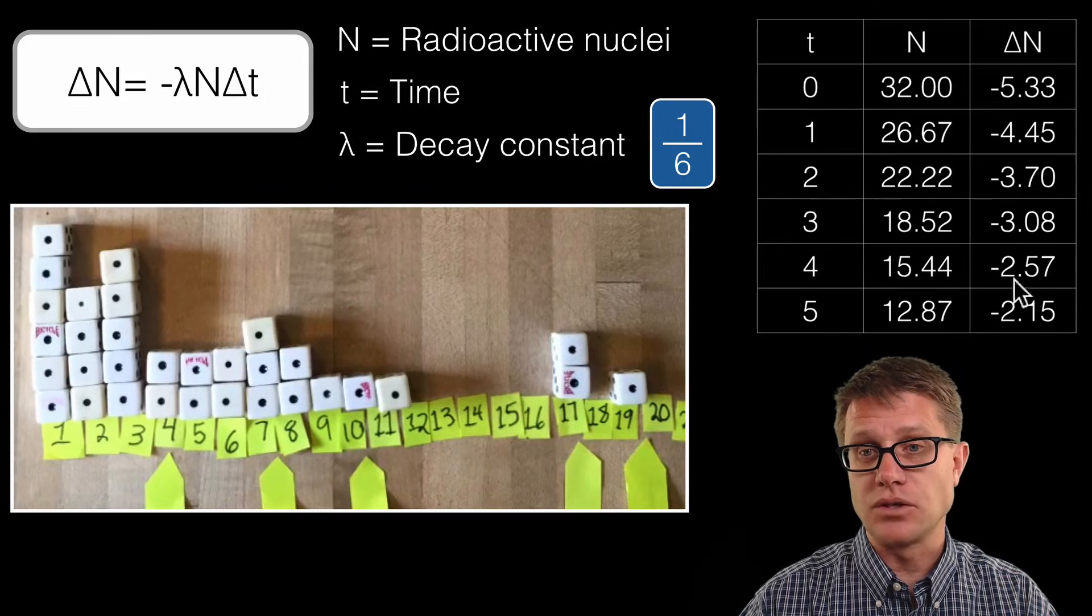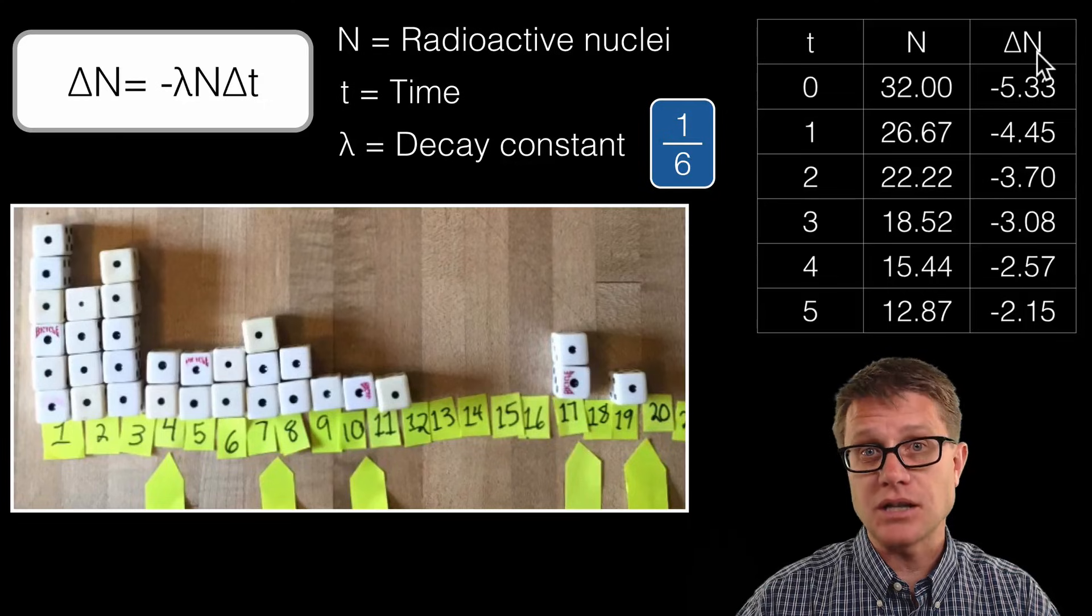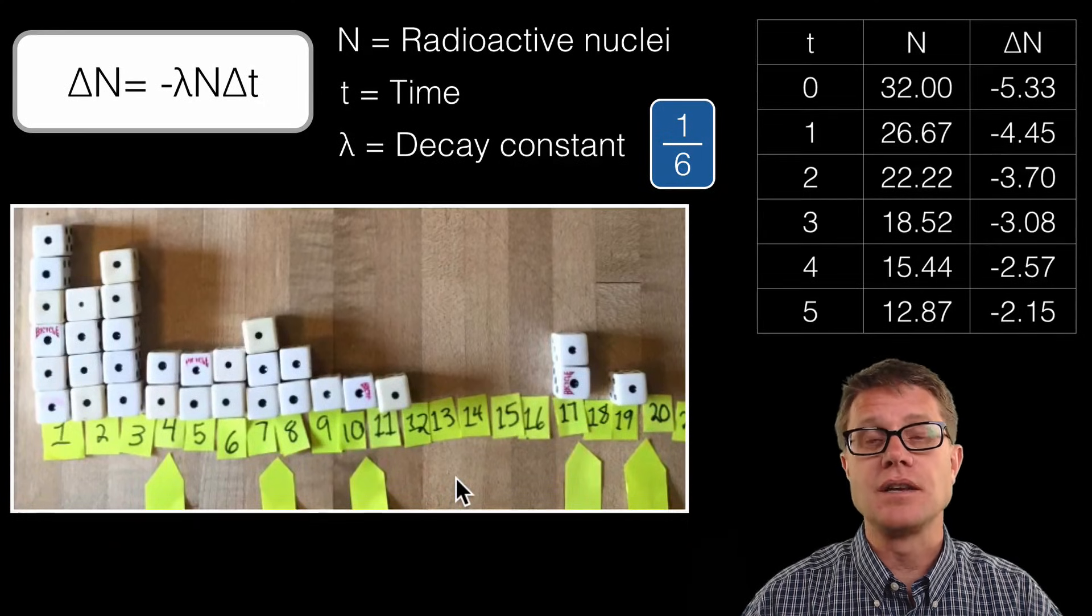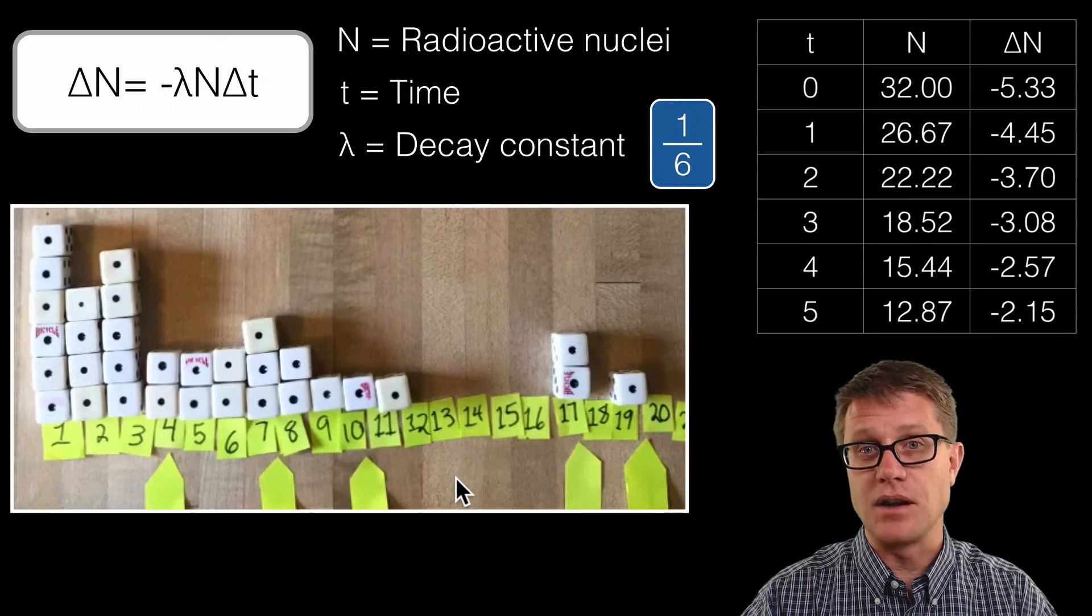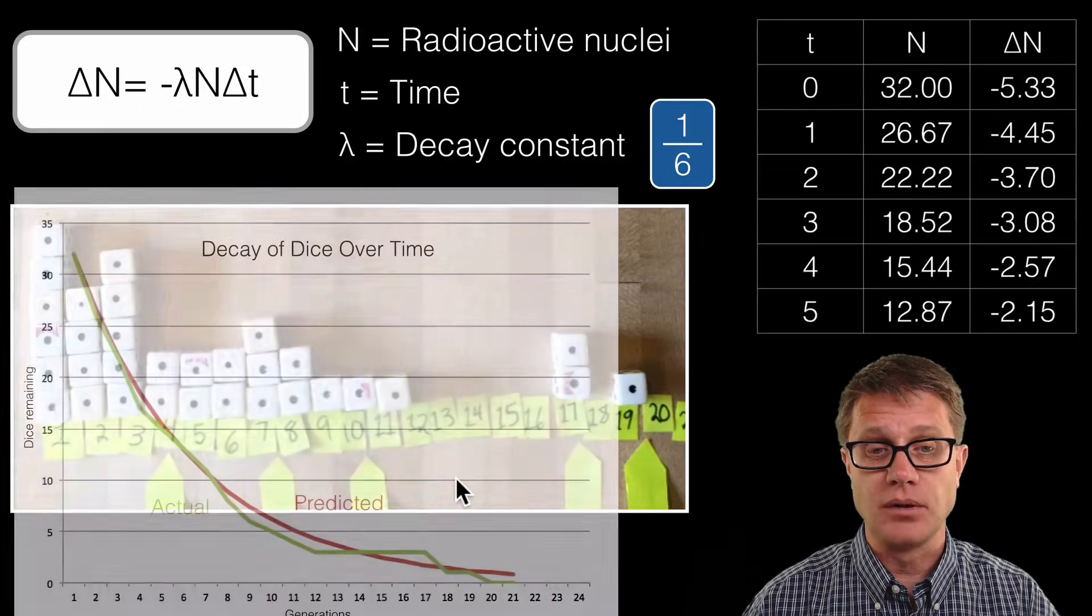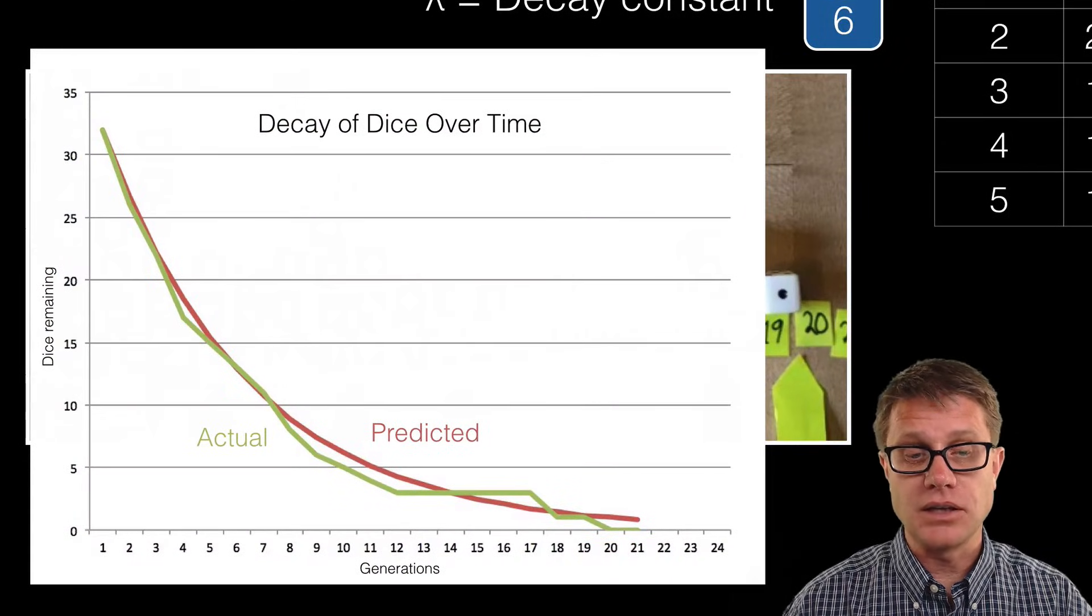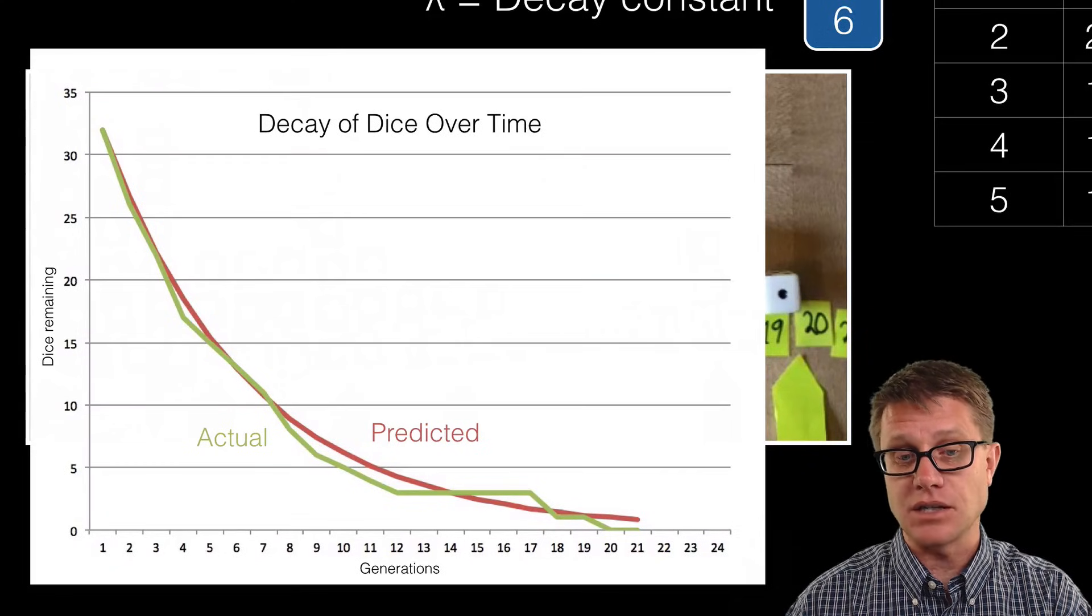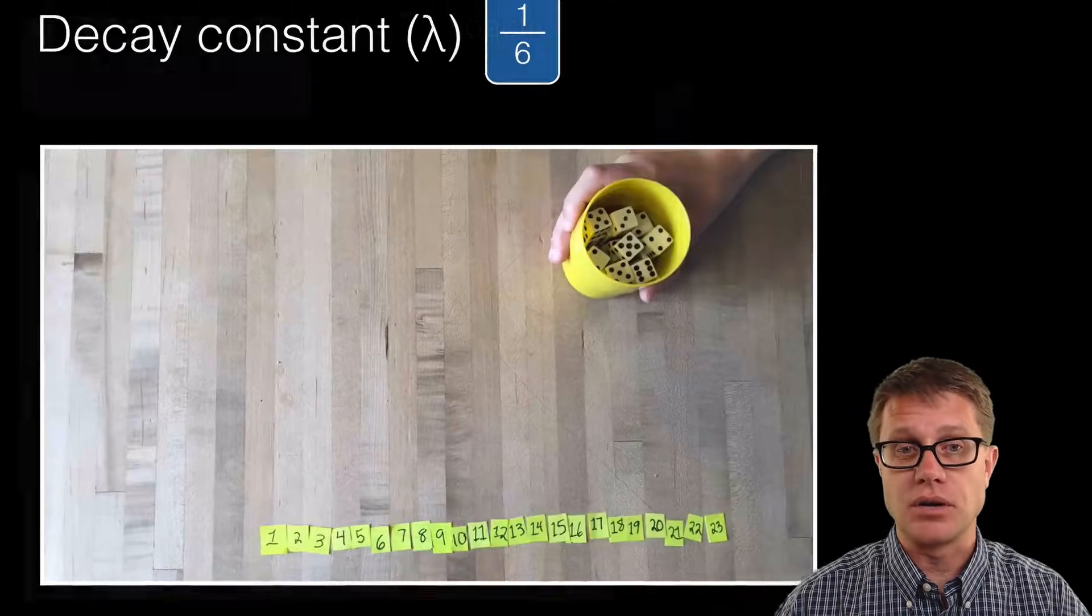Right here on the right is going to be what we would predict to occur, and this is what actually occurred in this little simulation. The number of dice are so small compared to the number of nuclei in a sample, but if you look at my data, the green line represents the actual data that we found. The red line represents the predicted, and you can see that it matches up pretty quickly.